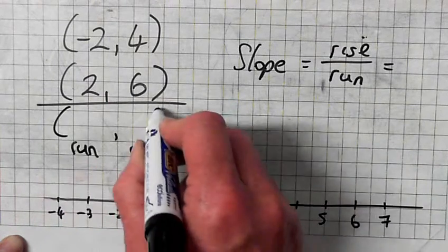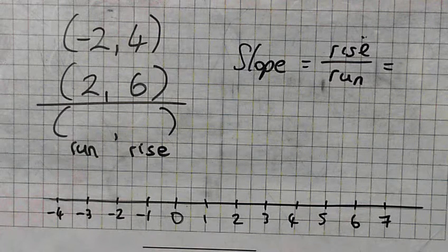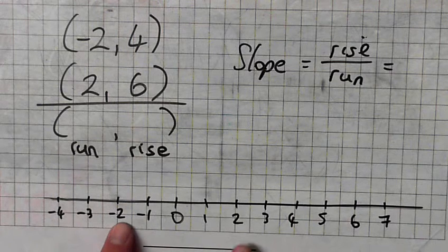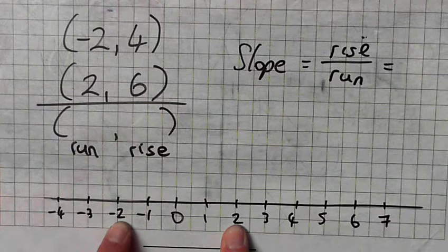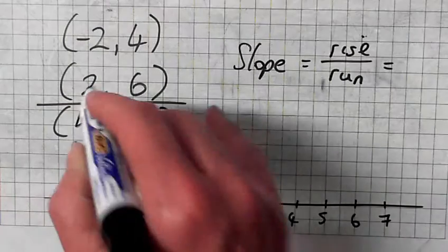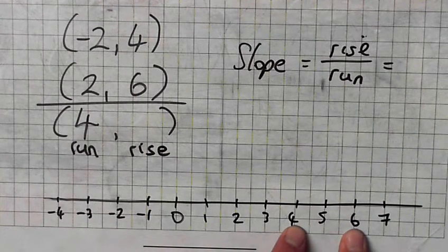Run and rise. Believe me, lads, there's a more difficult way of doing this, so get used to this way. Yeah, I'm good. What's the gap between minus 2 and 2? Four. See? The gap. The difference. What's the gap between 4 and 6? 2. 2 over 4.